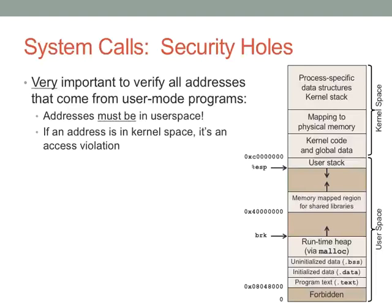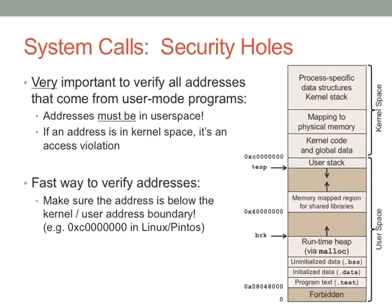Important constraints: when you get a pointer from a user program, it must point to an address in user space. If it points to kernel space, you send the process a signal saying it violated memory access constraints. A really easy check is: is the pointer less than 0xC0000000? If it's less than that, it's in user space; if it's that value or higher, it's in kernel space. That's one of the checks you need to do in your program.